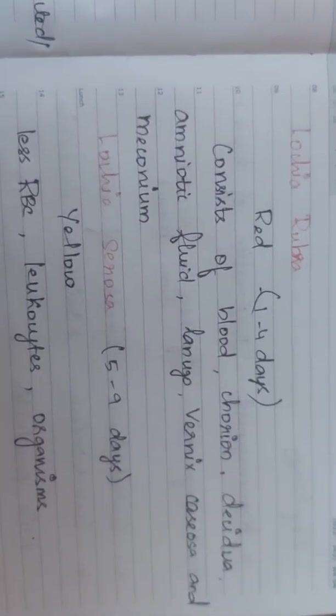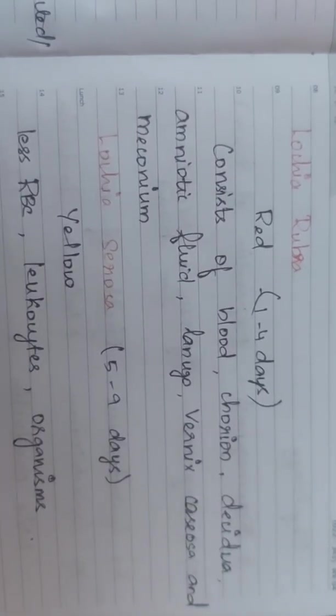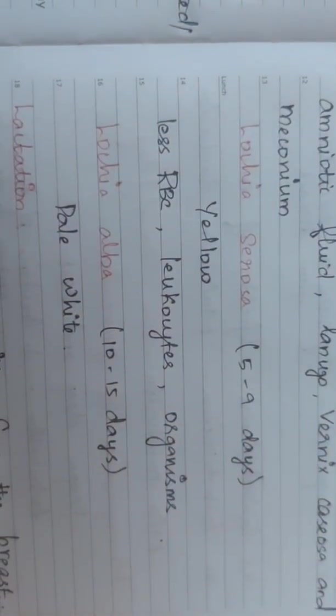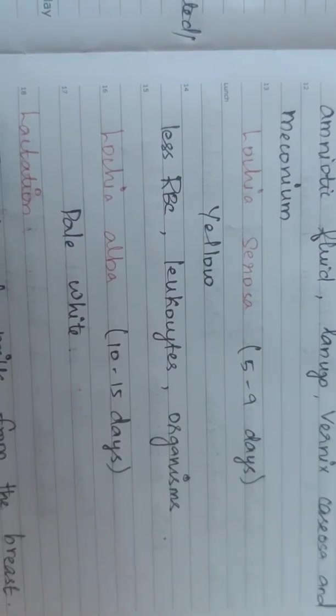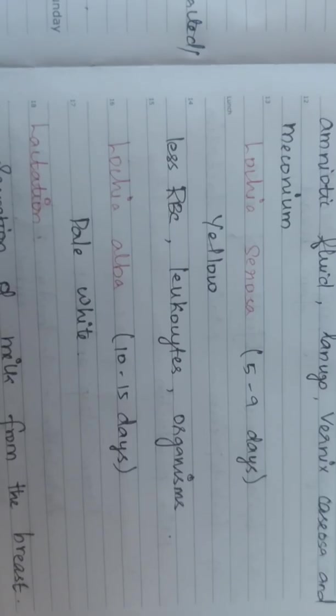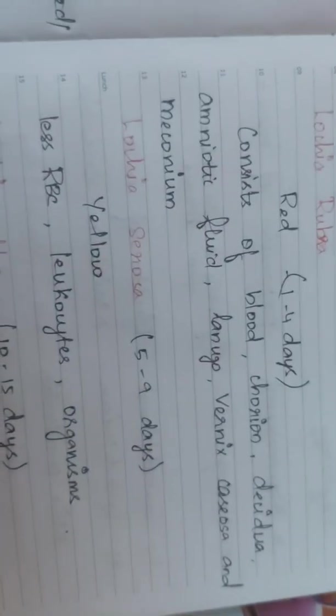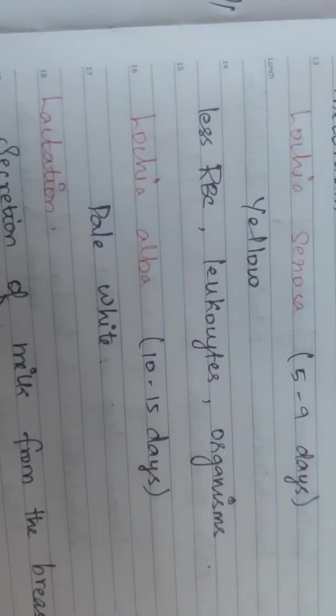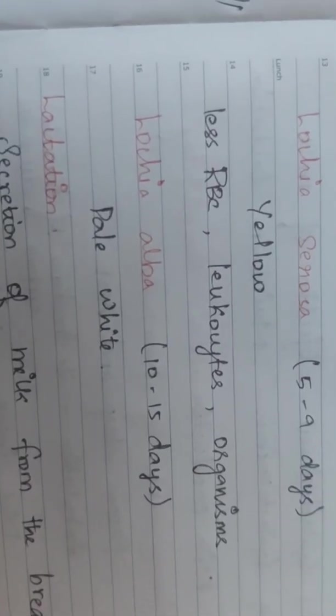Next, lochia serosa, five to nine days, yellow in color with less RBCs, leucocytes, and some organisms. Following that comes lochia alba, 10 to 15 days, pale white in color.